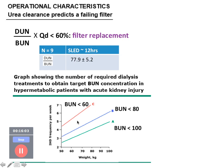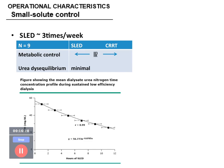Another graph shows the relationship between dialysis frequency per week and ability to reduce blood urea. With 2 to 3 dialysis sessions per week, blood urea can be maintained below 100; with 3 to 4 sessions, below 80. There is a linear correlation between the number of dialysis sessions per week and the ability to clear urea.